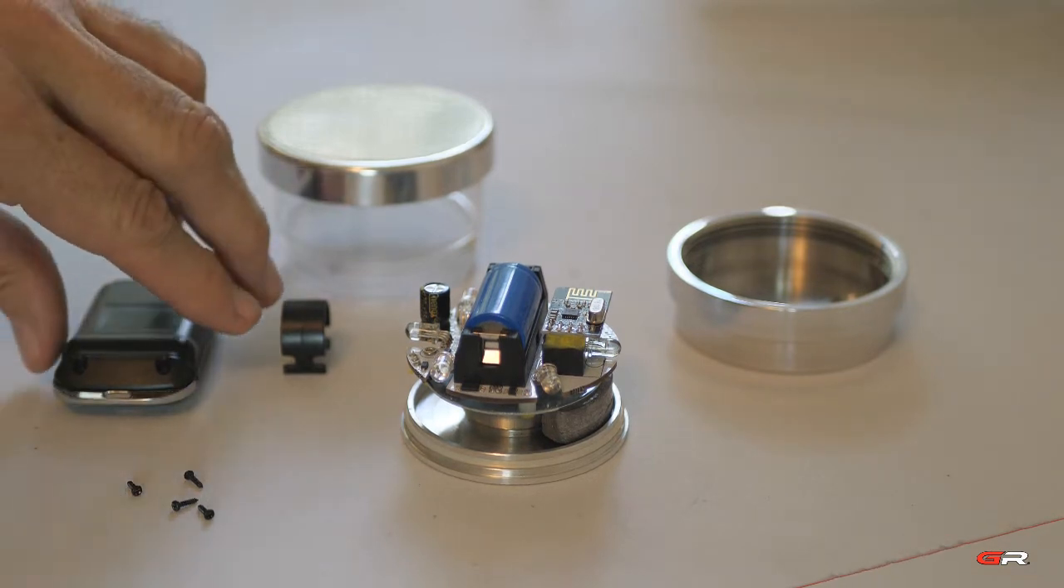Remove the remote control from the package and test to see if there's a battery inside by pressing one of the buttons. If you see the light come on at the top, you know there's a battery installed. If not, remove the four screws from the remote control and take the back off.